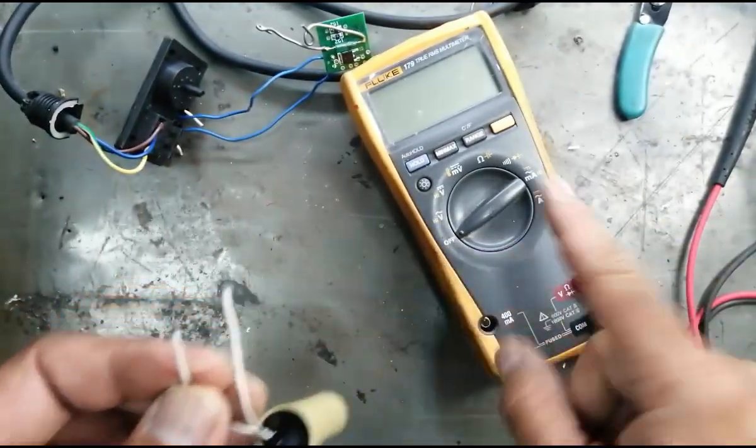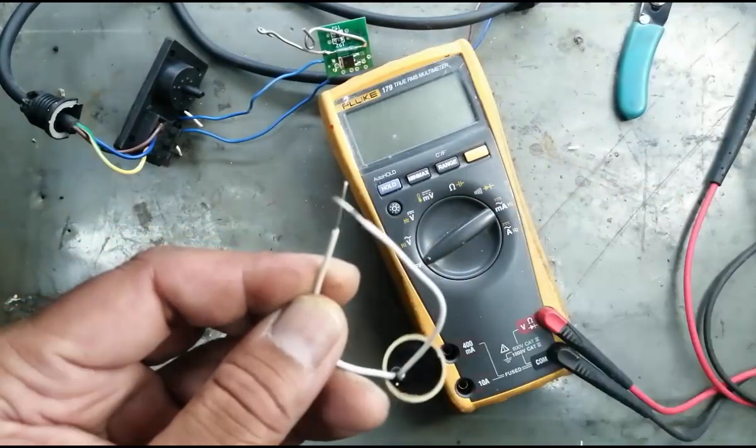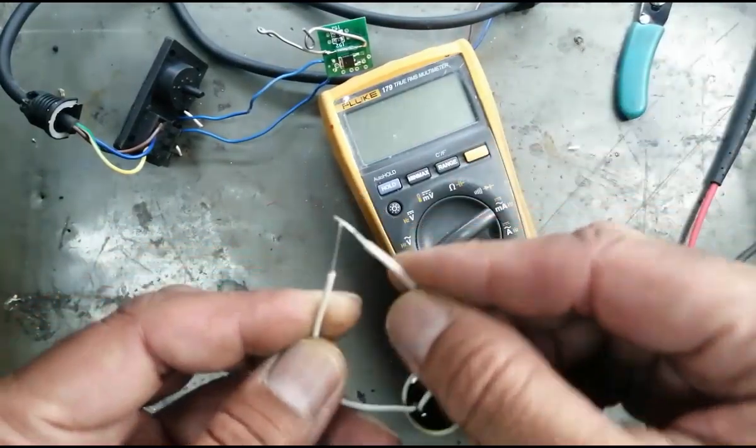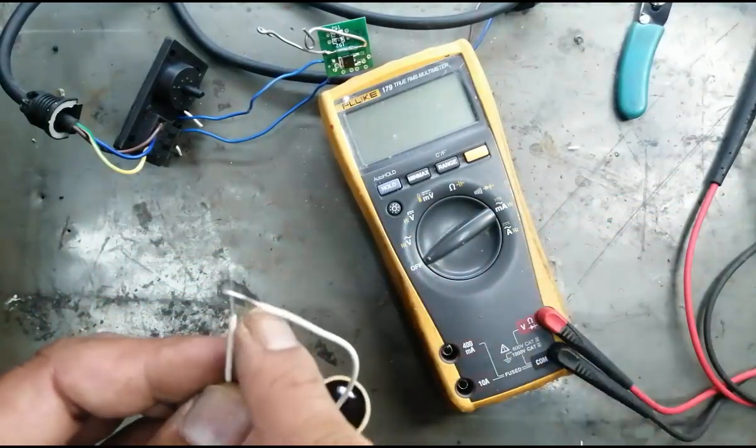Before testing with a multimeter, you have to short both leads. This is for safety. Never connect the multimeter directly to a capacitor.